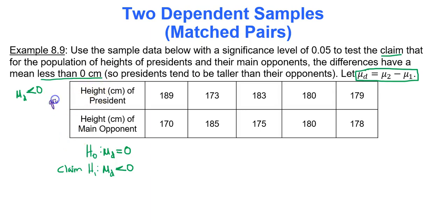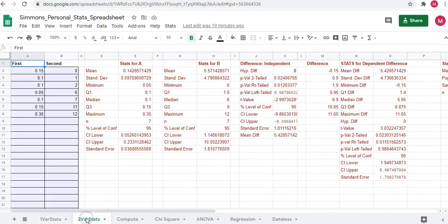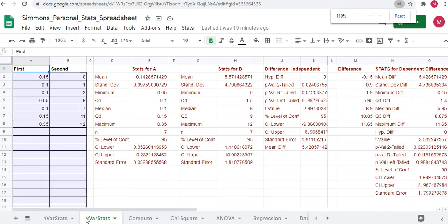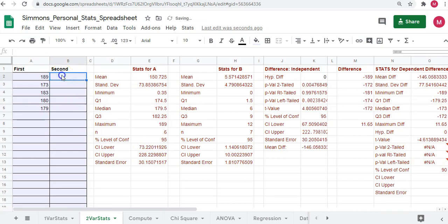The first group listed will always be group 1. The second group listed will always be group 2. All we have to do is go to Google Sheets, go to the 2 variable stats tab. I'll zoom in a little bit here. In column A, starting in cell A2, you will type your first row of data values: 189, 173, 183, 180, 179. Delete anything else that's left. It's probably a best practice to delete out any data currently there before you start typing.